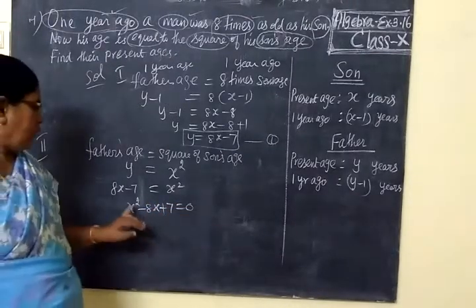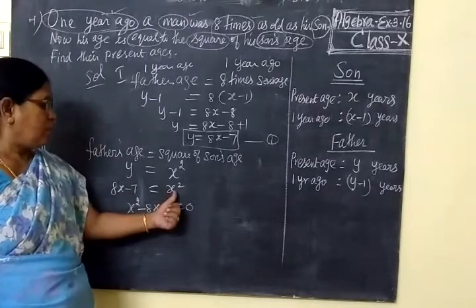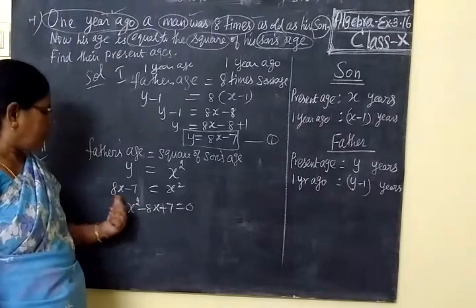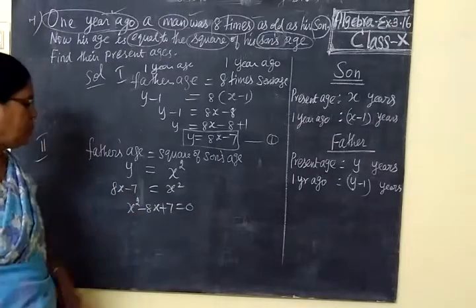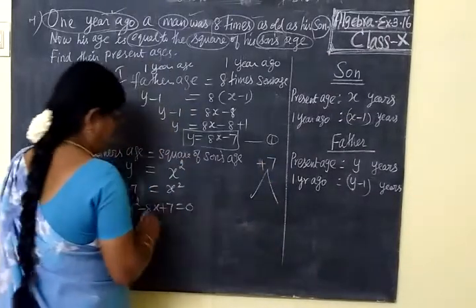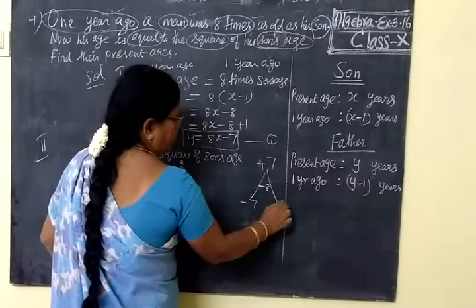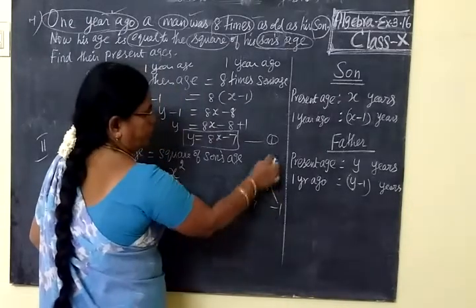Many times we are telling, any one side only you are changing the side. This side I am not changing, this side I am changing. Plus becomes minus, minus becomes plus. So multiply: 1 times 7, minus 8. Minus 7, minus 1. Minus into minus is plus.